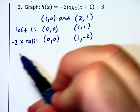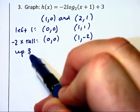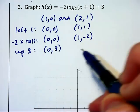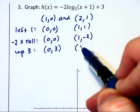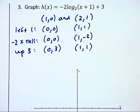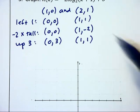Finally, the plus 3 at the end says we need to move our graph up 3 units. That takes these two points to (0,3) and (1,1). Let's plot these two points here.